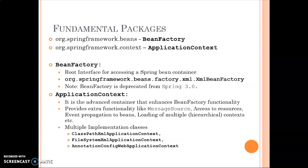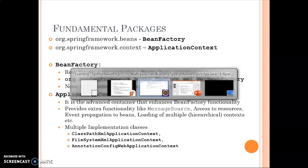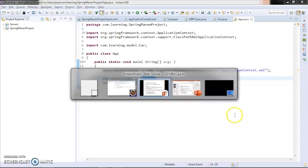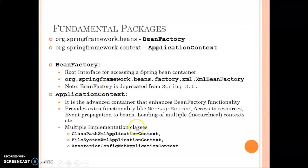Something common to both BeanFactory and ApplicationContext is that both are used for obtaining bean objects, and both have a method called getBean() which you can use to obtain a bean. If you saw our previous example, you would have seen the getBean() method used there.